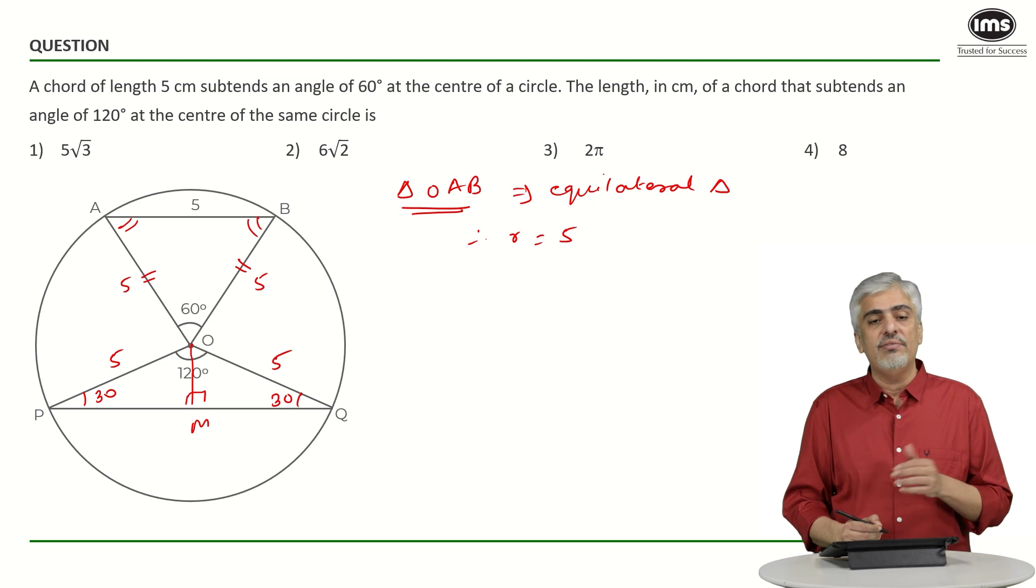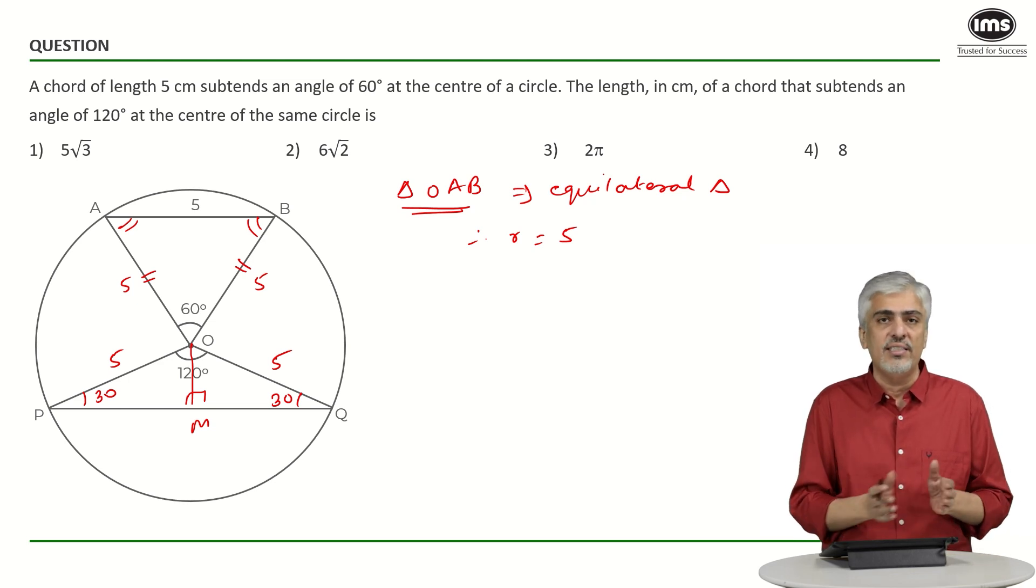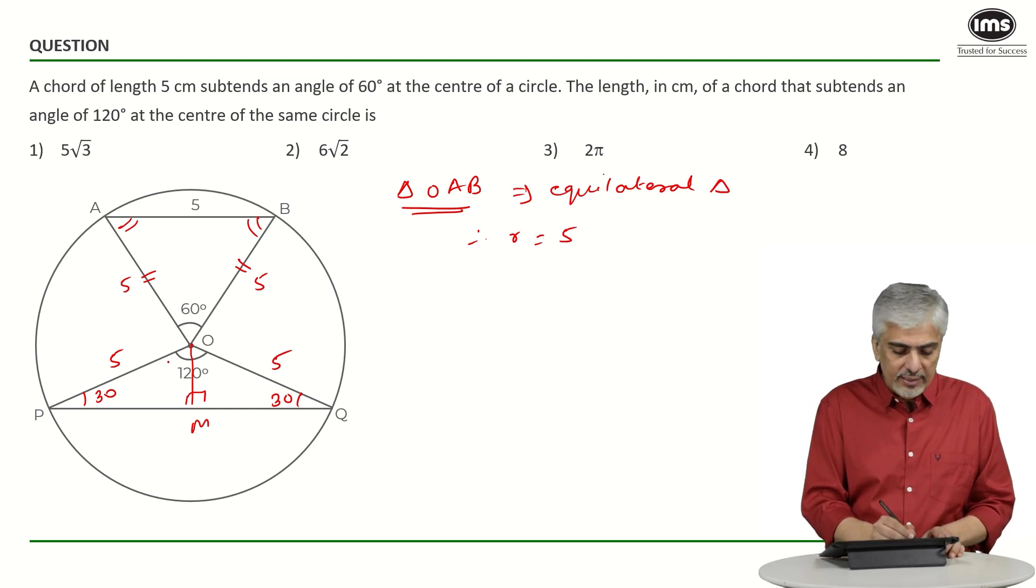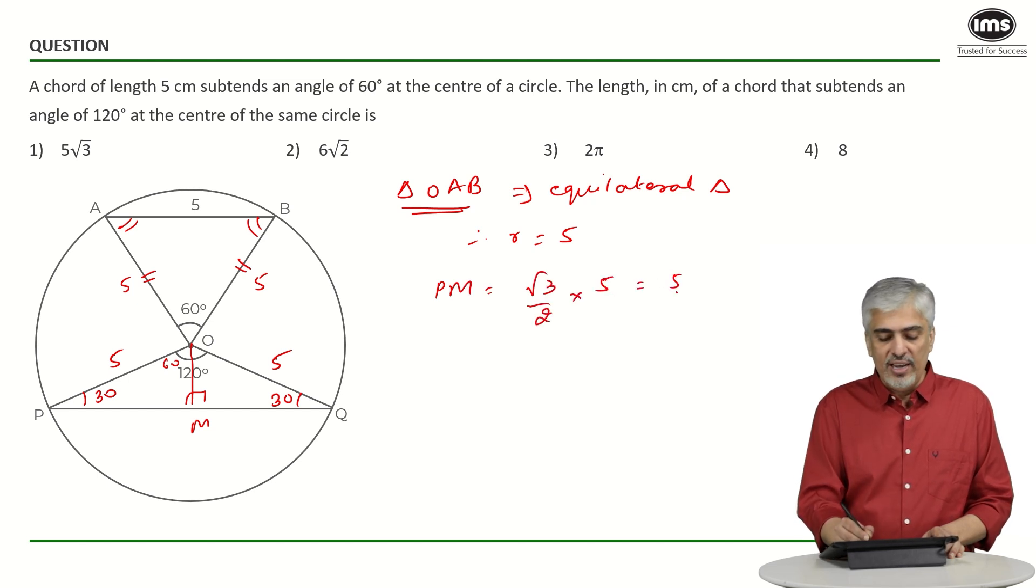Or you could have dropped a perpendicular from here. And we could have then use 30, 60, 90, 30, 60, 90 theorem on one side and just doubled up. First, we would have found PM. So say PM, this angle would be 60. PM would be root 3 upon 2 of the hypotenuse which is 5. So it will be 5 upon 2 root 3 PM. But we want to find PQ which will be double of that. So answer will be 5 root 3 which is the first option.